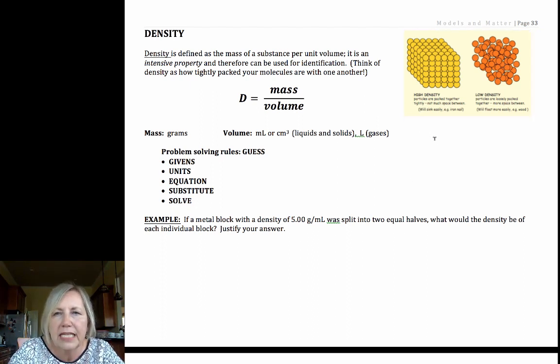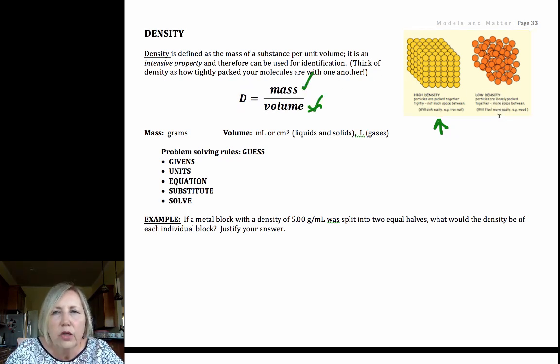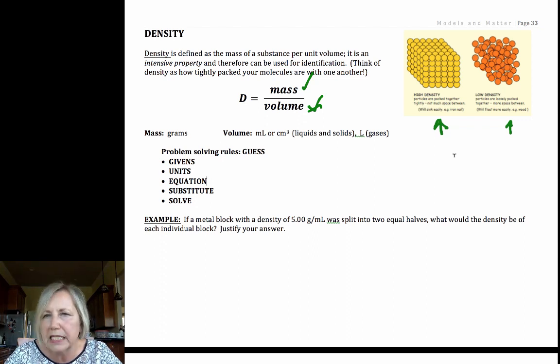When we're talking about density, a high density would happen when particles are very tightly packed. So within a given volume, you have a lot of mass. Now at low density, there's going to be a lot more space between the molecules or particles, you're not going to have much mass in that given volume.